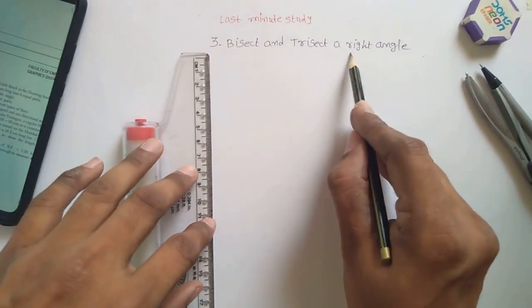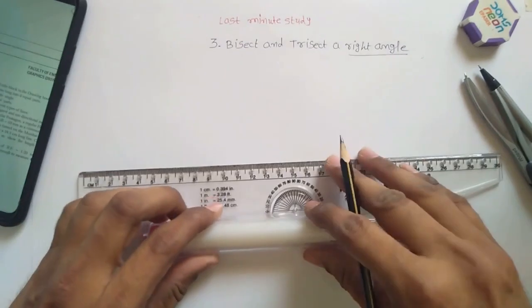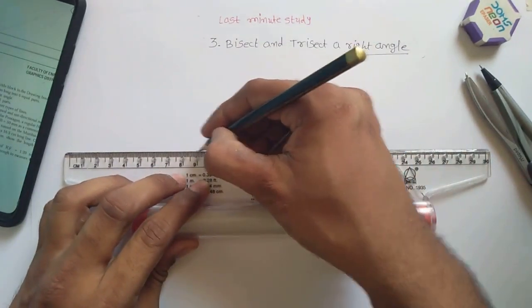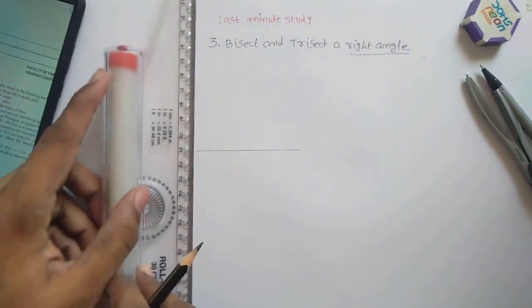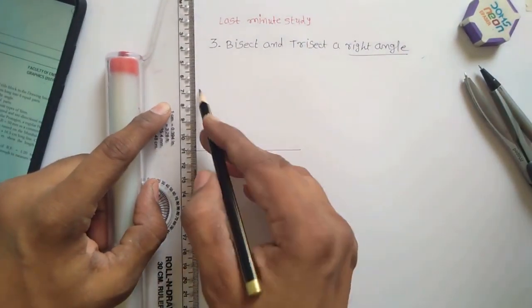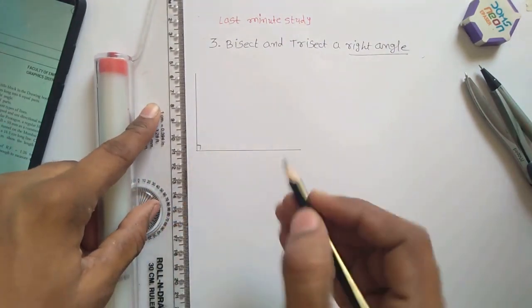So first of all, what is a right angle? You have to construct a right angle here. So by using a ruler scale, I will construct a right angle with random lines. So these two must be perpendicular to each other. So this is 90 degrees.